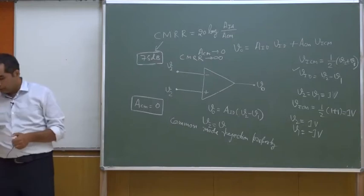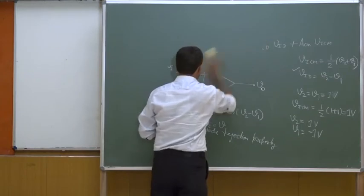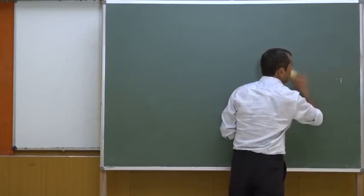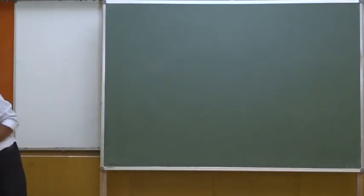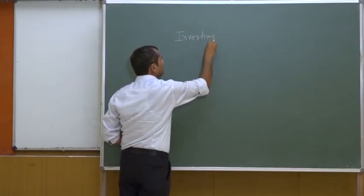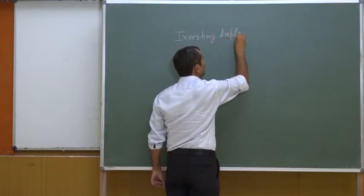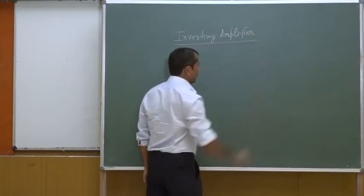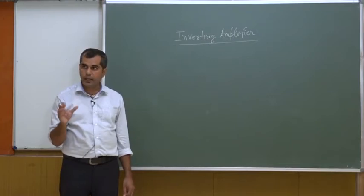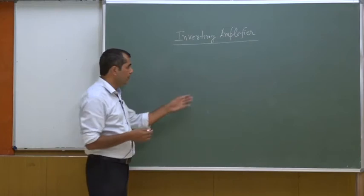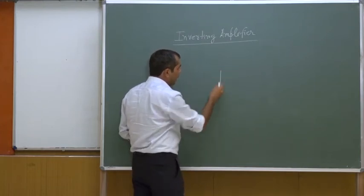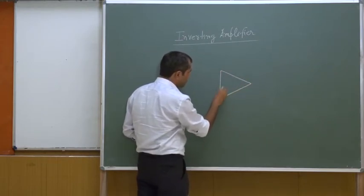After this discussion, we shall talk about the inverting amplifier first, then the non-inverting amplifier. As I mentioned, because of the very high gain of the operational amplifier, we cannot use it as-is for amplification. So we modify the circuitry using external components, and one possible configuration is something like this.